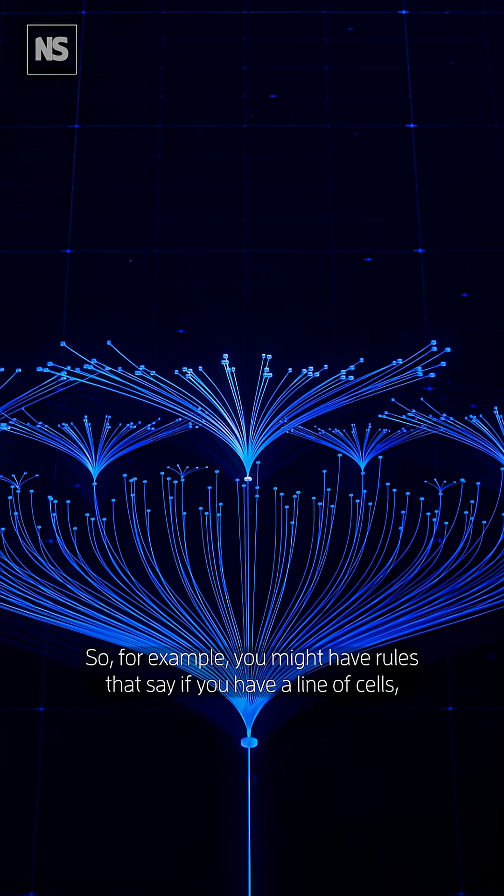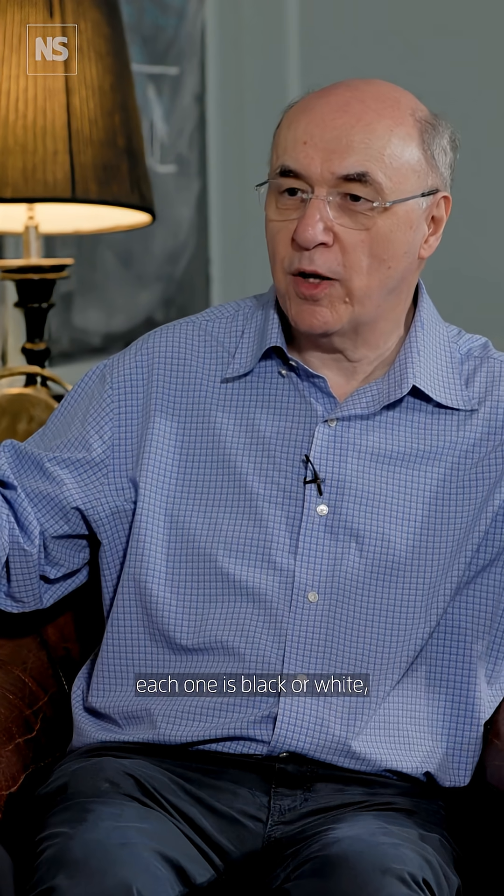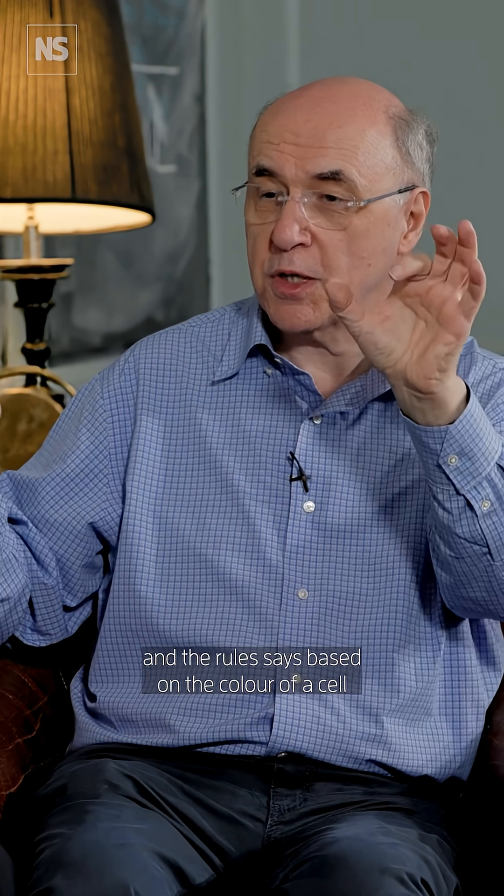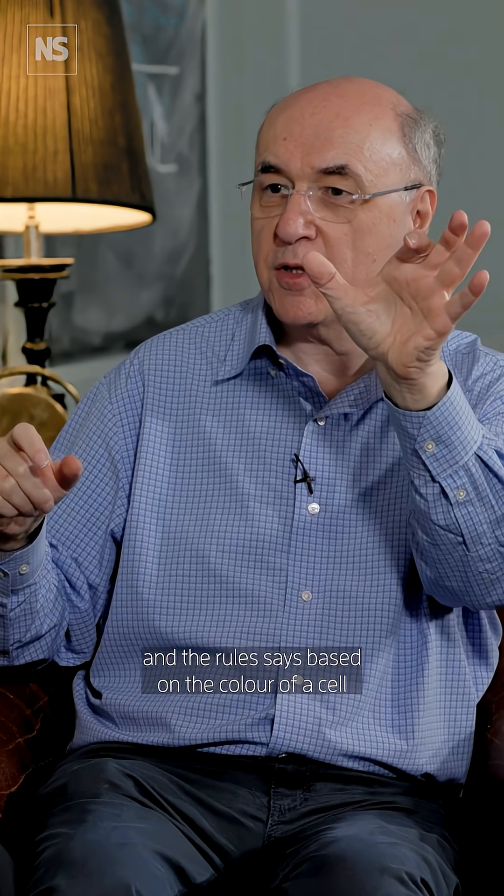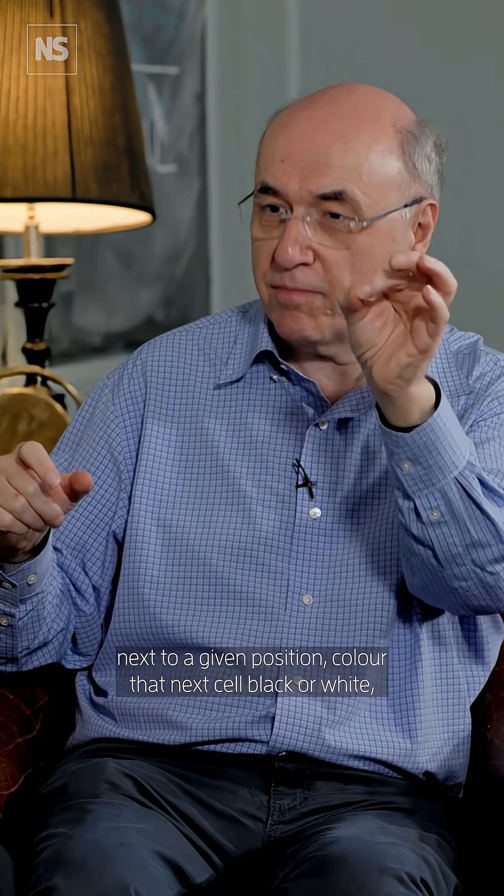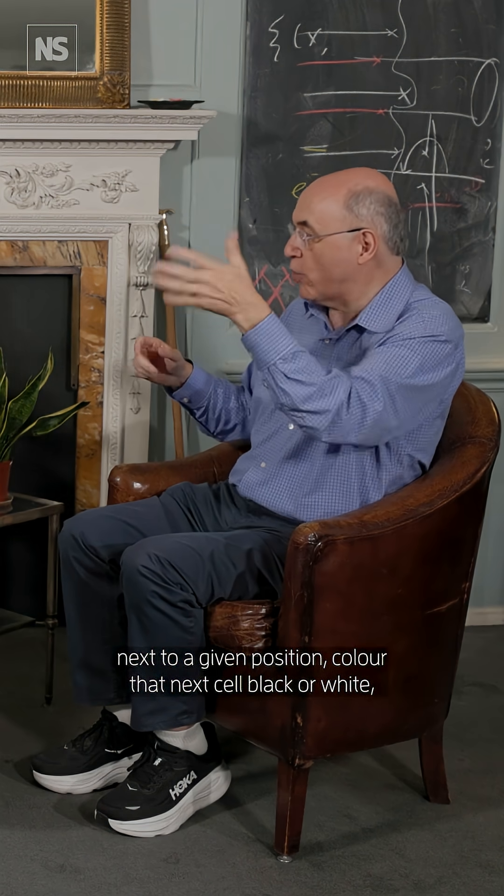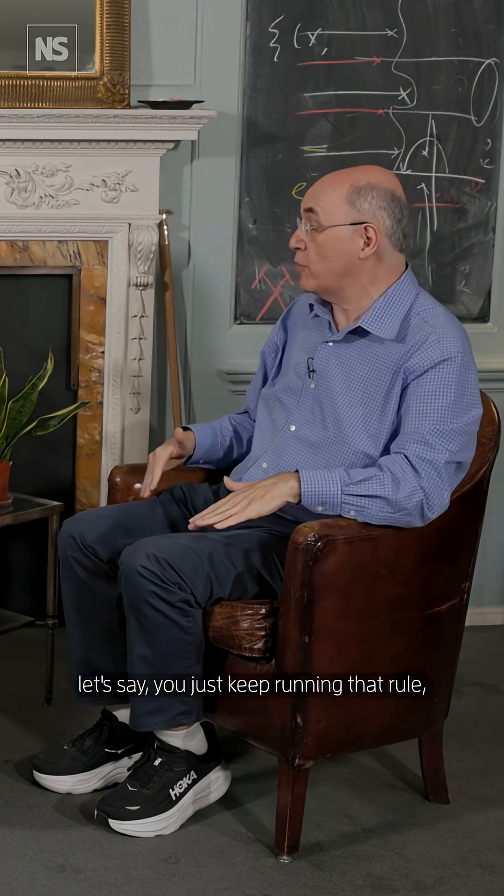For example, you might have rules that say you have a line of cells, each one is black or white, and the rule says, based on the color of a cell next to a given position, color that next cell black or white. You just keep running that rule. You run it millions of times. What do you get?